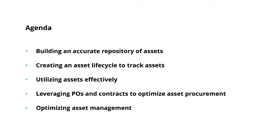An asset has a life cycle — it goes from when it is procured, then assigned to someone and in use, sometimes in storage, sometimes needing repair, and finally being disposed of when expired. Next, we'll see how you can utilize assets effectively by collecting necessary information about hardware and software assets, and how you loan out assets to people on a temporary basis.